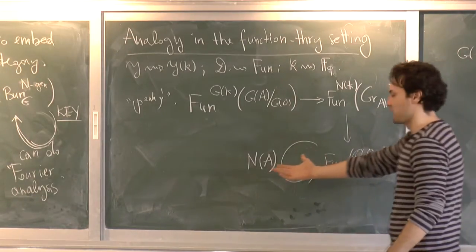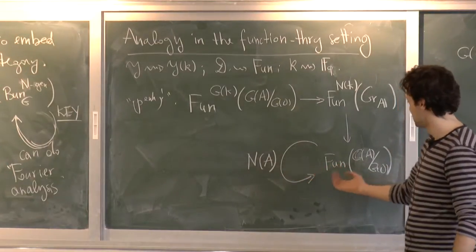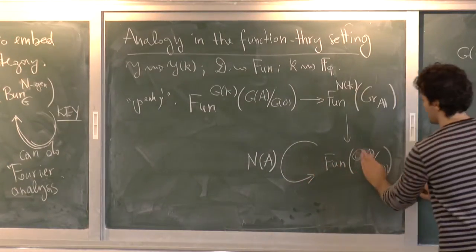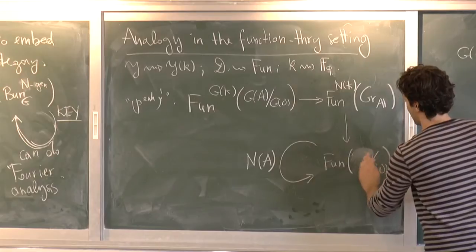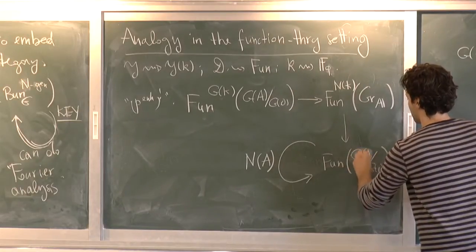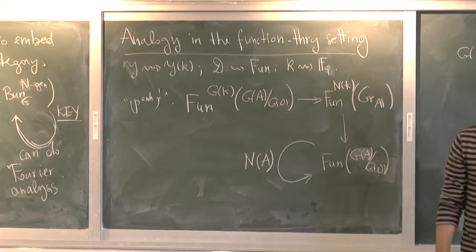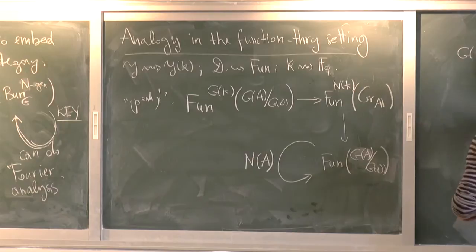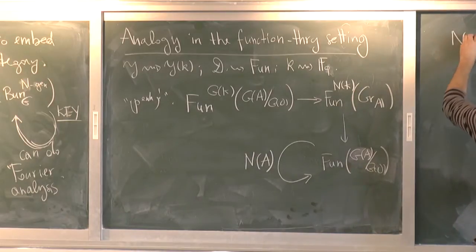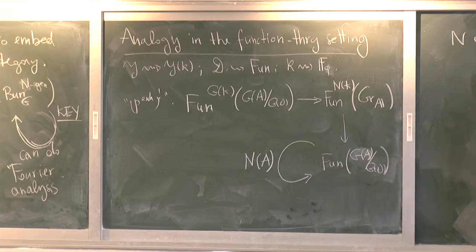And you could object, why did I say N of A? I also have an action of the entire G of A on this. But the point is that N of A is unipotent, hence almost abelian. Consider N being unipotent, it's almost abelian. And I will be precise later for what I mean by that.